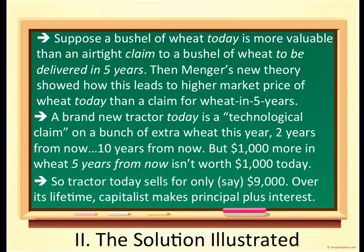Böhm-Bawerk is going to say: look — you now can go consume $1,000 worth of goods and services and do the whole process again. So now you have this apparent source of effortless and endless wealth because you were in command of that $9,000 of monetary or financial capital up front. And we've explained that phenomenon ultimately by the fact that present wheat is more valuable subjectively than future wheat. That's the theory. That's the explanation.